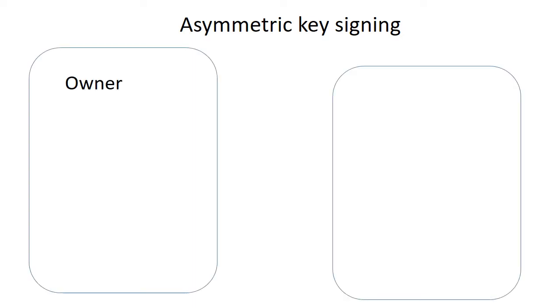Asymmetric keys could also be used for signing the data, but in this case the data flow is opposite. The data is sent from the owner of the key pair — with the private and public key — to anyone else. To achieve this, you want the receiver of this data to be one hundred percent sure that this data was received from the owner, meaning that no one else could send the same data with the same encrypted hash to this party.